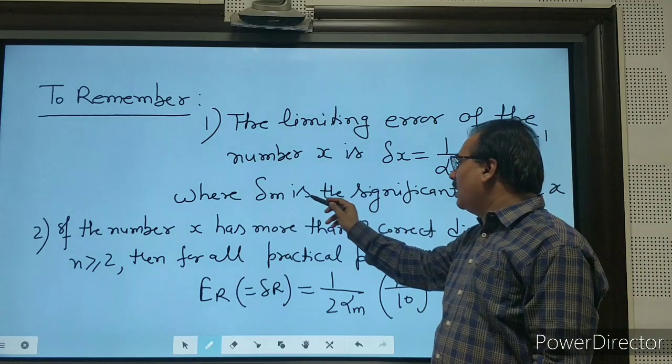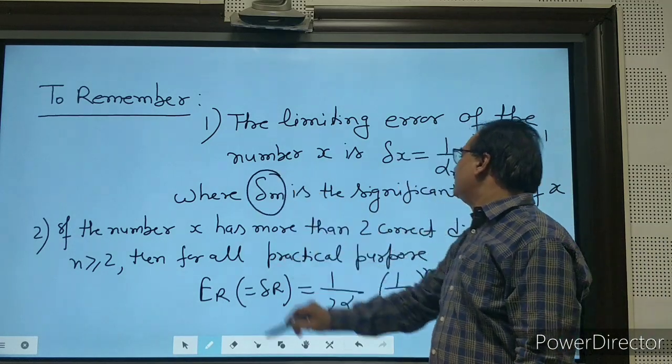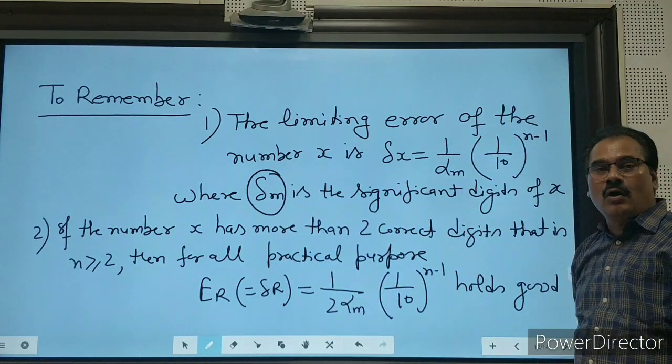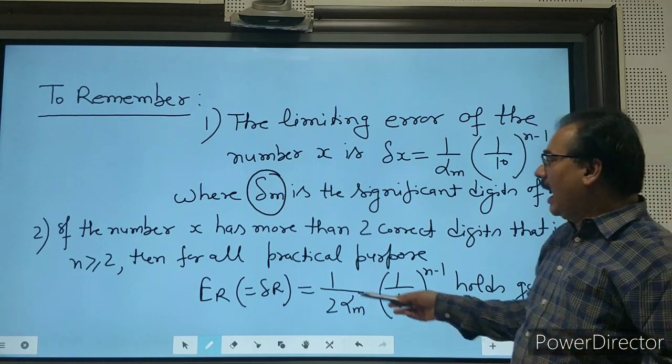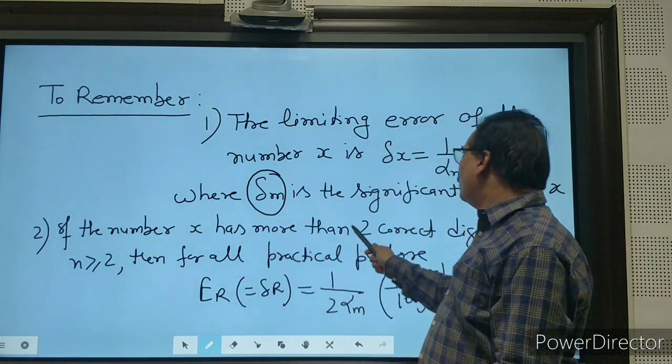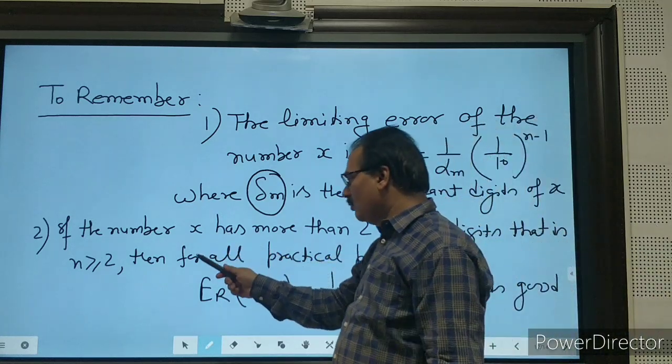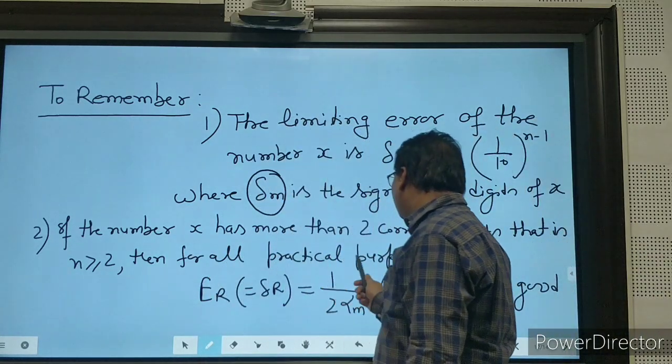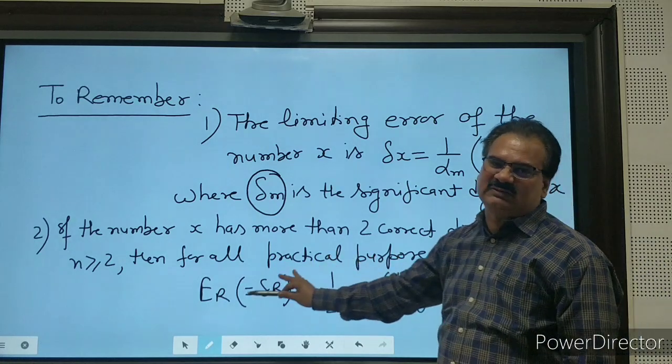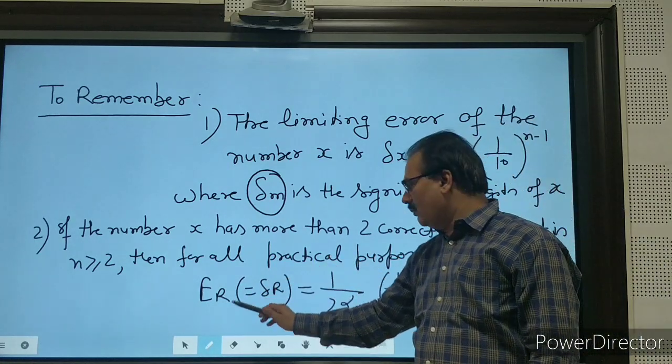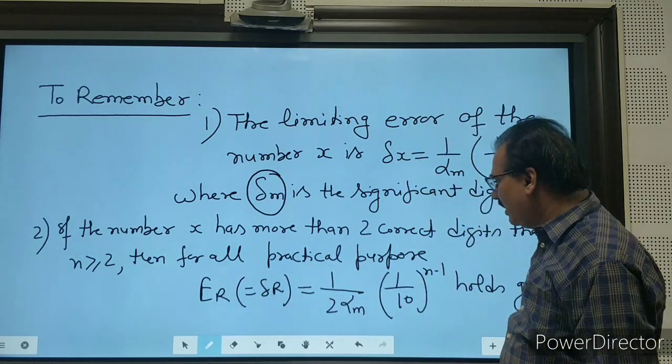And if the number x has more than two correct digits—that is, n ≥ 2—then for all practical purposes we will use this formula. This is a very important formula: the error Δx = (1/2α_m1) × 10^(n-1) holds good.